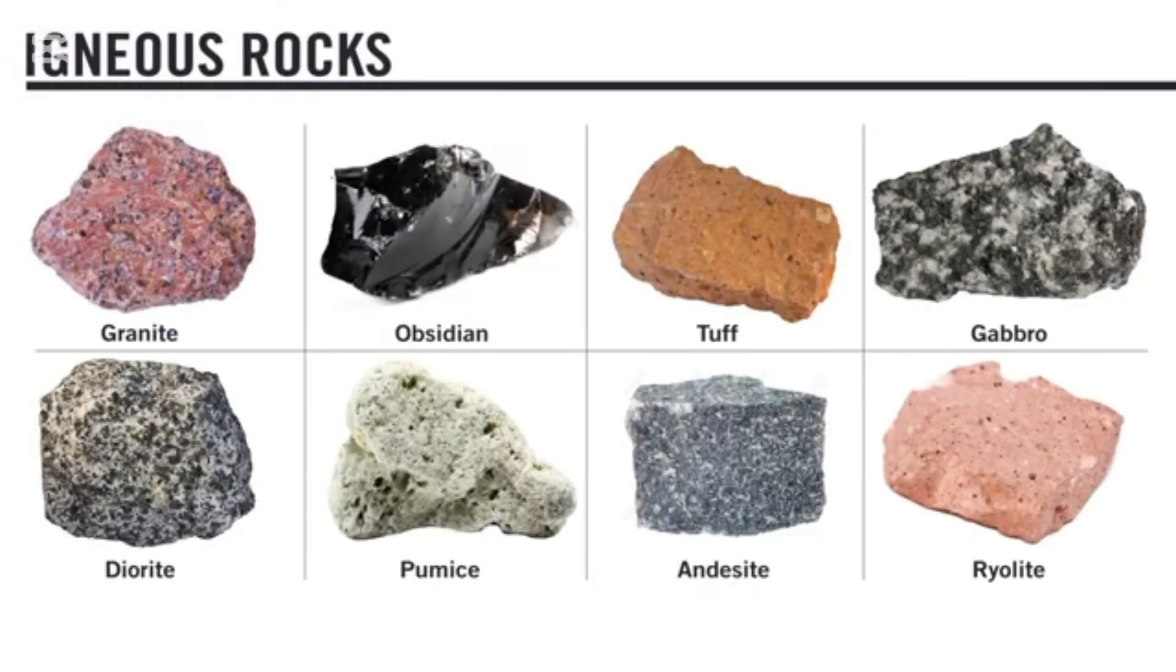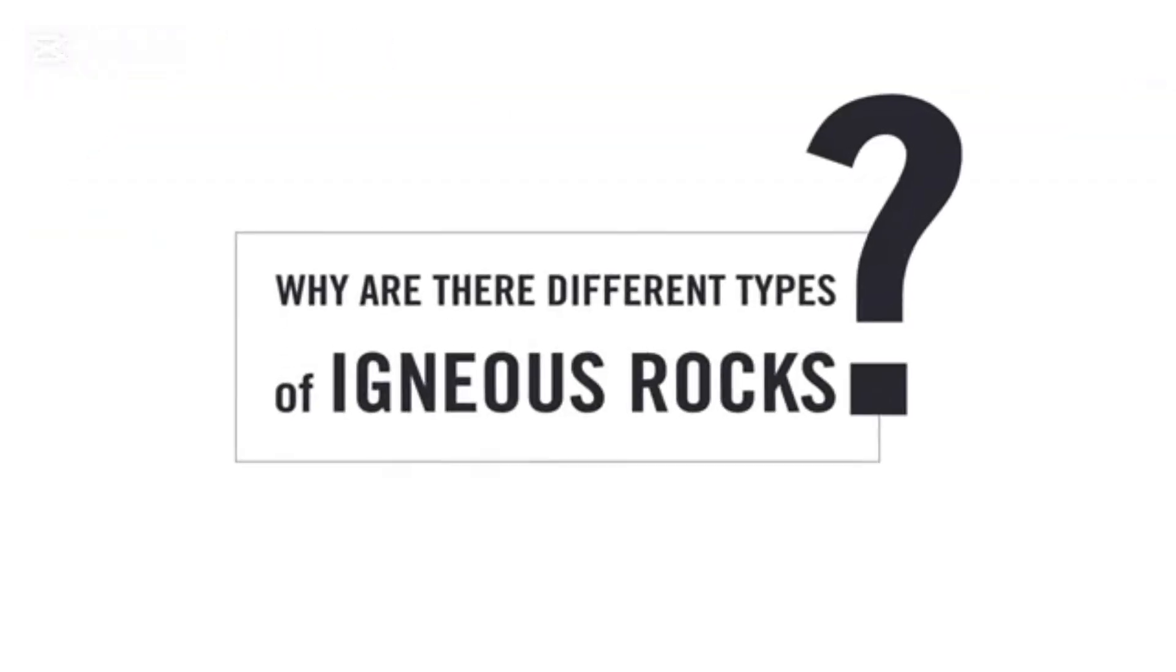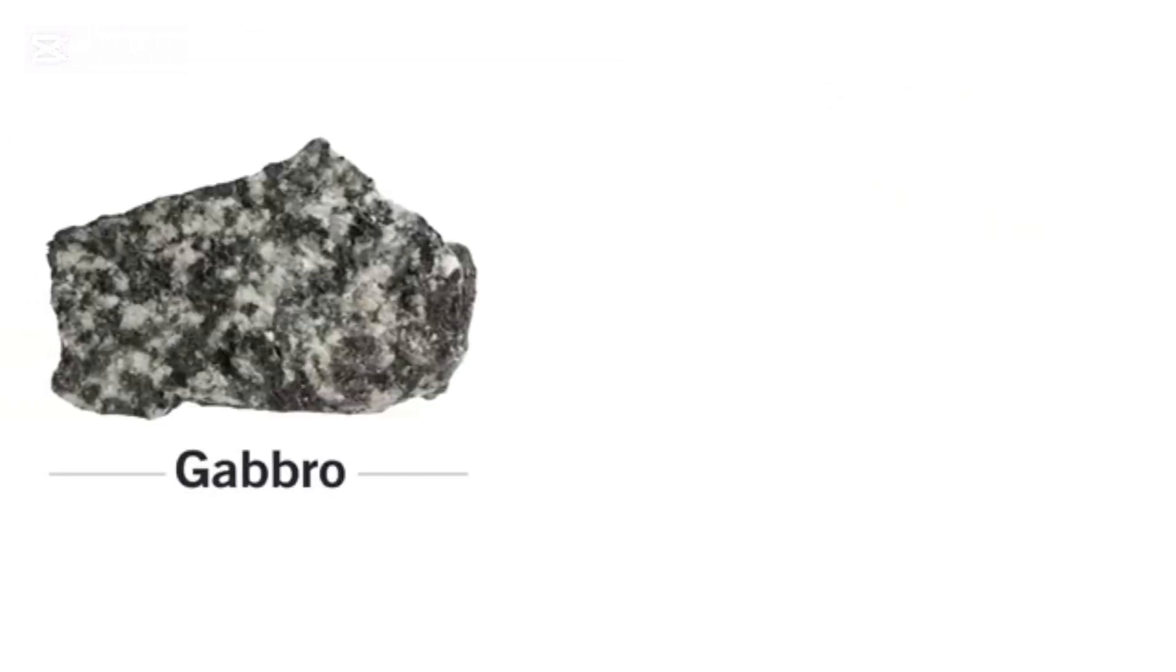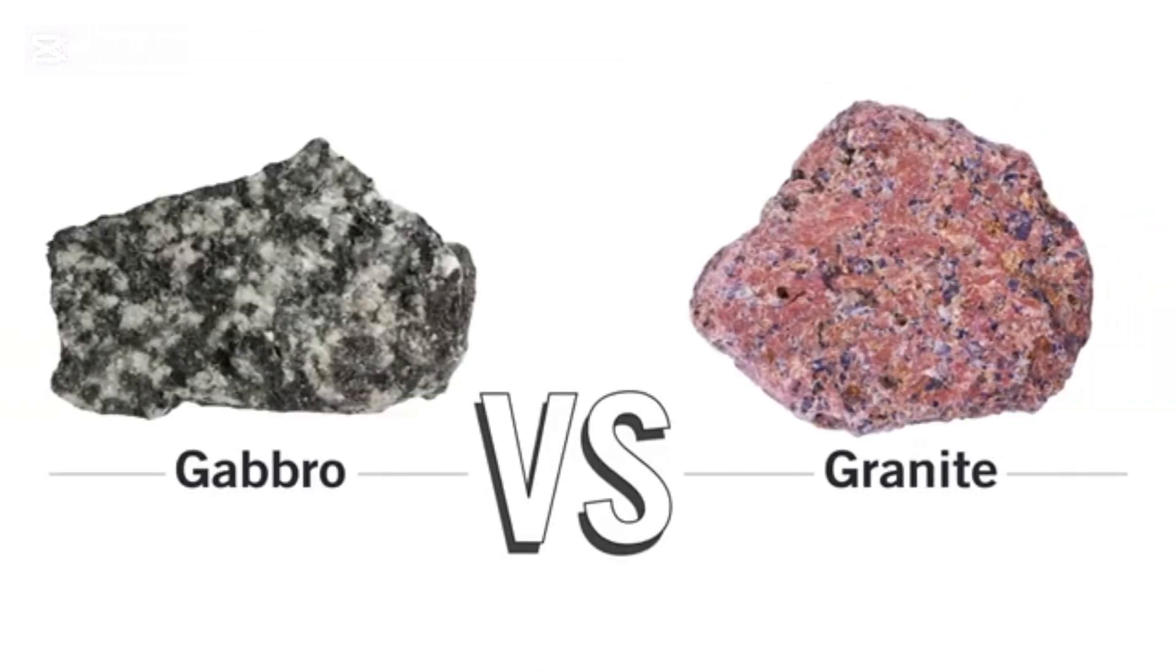If all igneous rocks form from cooled magma or lava, you may wonder why are there different types of igneous rocks? Why are some igneous rocks dark-colored, like gabbro, and others are light-colored, like granite?